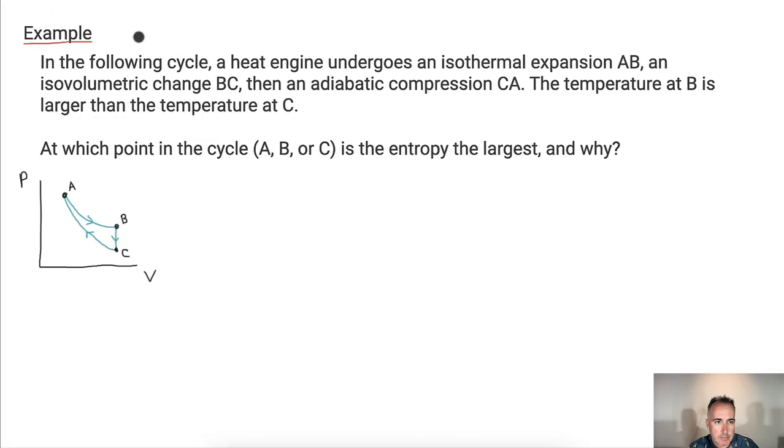Let's look at another example. Here we have a cycle, and we're told it's a heat engine. It undergoes an isothermal expansion from A to B, then an isovolumetric change B to C, and after that an adiabatic compression C to A. We're told that the temperature at B is larger than the temperature at C. In other words, it goes from colder to hotter here. The question is, at which point in this cycle, A, B, or C, is the entropy the largest, and why?